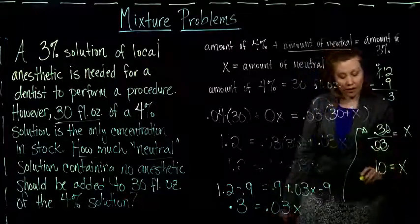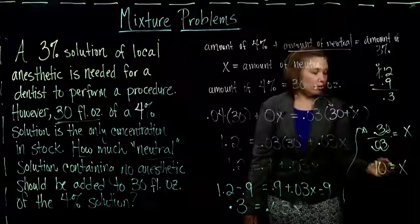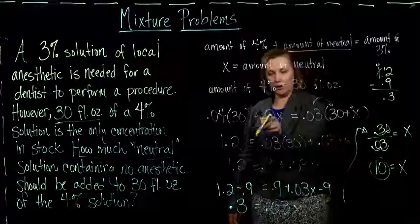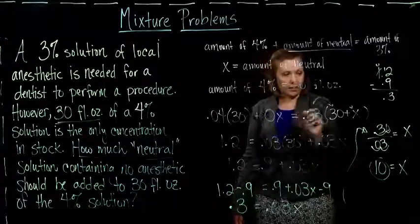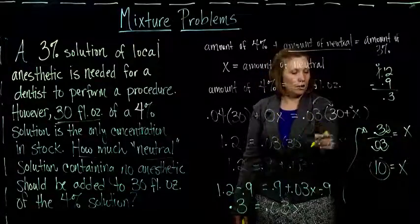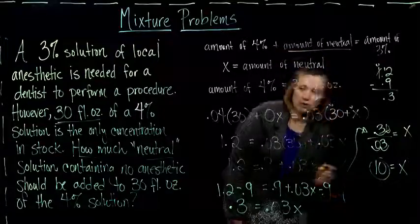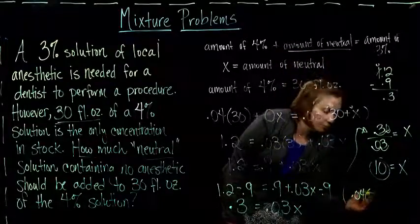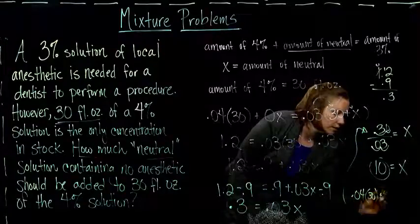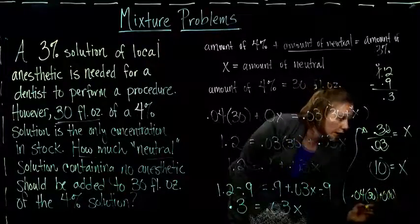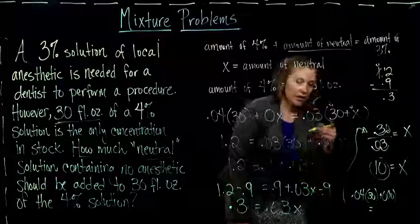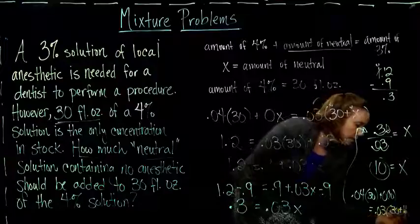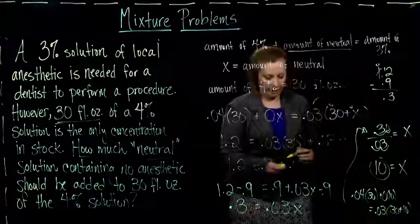And you could, in fact, check your work. If you wanted, all you would do is take this 10 and put it in for x in our equation here. So, when I take 0.04 times 30 plus 0 times 10, I should get the same answer as when I do 0.03 times 30 plus 10. If I did all my work correctly.